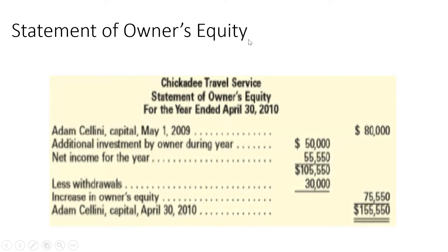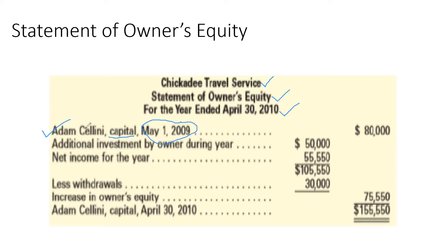Here is how it looks. You have the name of the business, the name of the financial statement, and the period it covers. It begins with capital — capital at the beginning of a particular month or year. In this example, Adam Seleni declared capital of $80,000 on May 1, 2009.